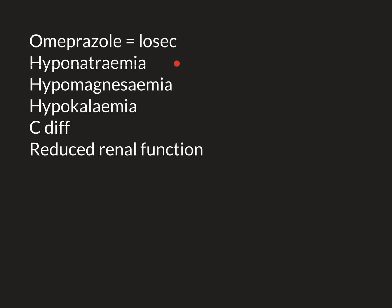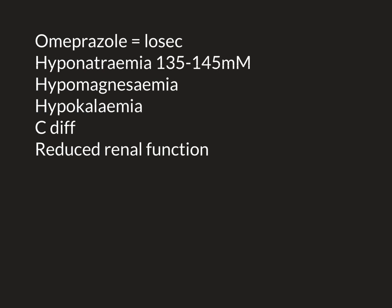Let's start with the first two: electrolyte disturbances. In your blood and in the extracellular fluid that bathes all of the cells of your body, there are electrolytes dissolved in that fluid. One of the most important ones is sodium — sodium chloride is salt, but you have both sodium and chloride dissolved in your blood and extracellular fluid. It's very important that the sodium concentration is kept at a normal level: 135 to 145 millimolar is the normal range.